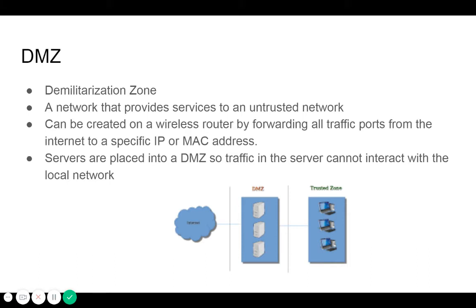DMZ, or demilitarized zone, is a network that provides services to an untrusted network. It can be created on a wireless router by forwarding all traffic ports from the internet to a specific IP or MAC address. Servers are placed into a DMZ so traffic to the server cannot interact with the local network.